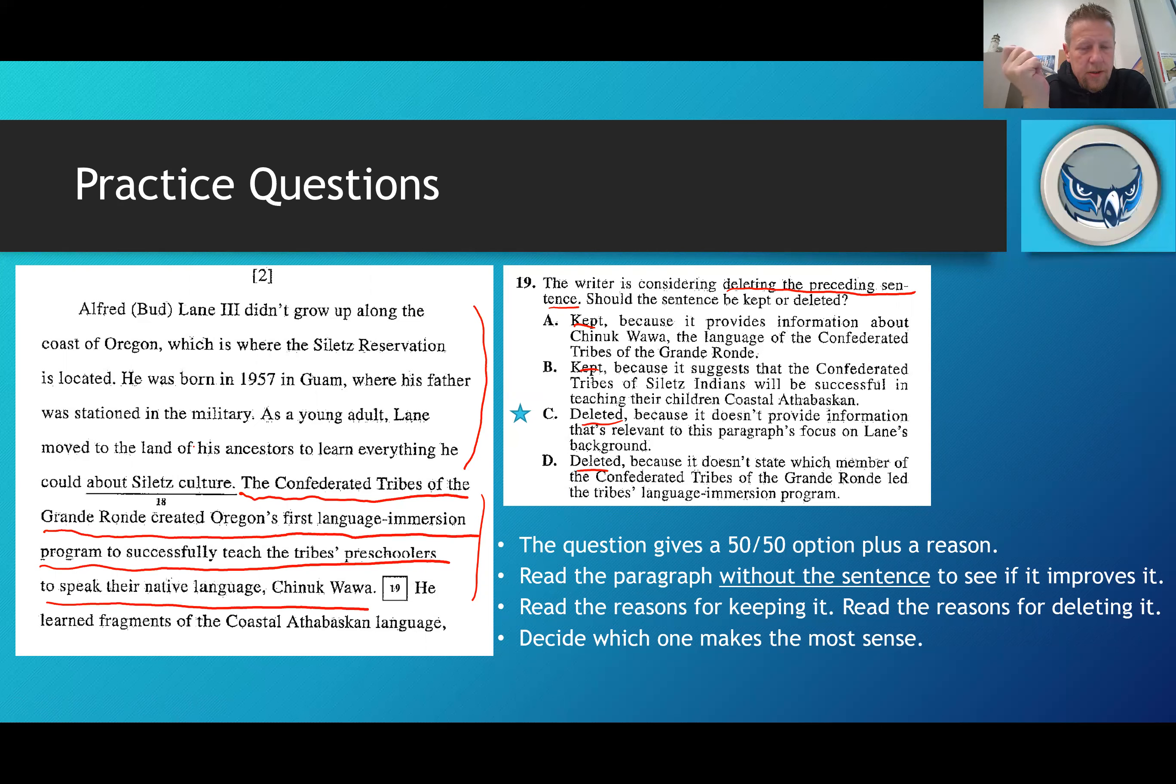So so far this paragraph is talking about this guy named Bud Lane who was born in 1957 and he didn't grow up in the Siletz reservation but he later became dedicated to learning everything he could about his culture. All right, and then we get the sentence about the Confederated Tribes of the Grande Ronde. That sentence literally has nothing to do with the preceding text. So we're going to choose C, deleted, because it doesn't provide information that's relevant to this paragraph's focus on Lane's background. Your answer is C.